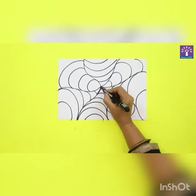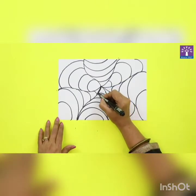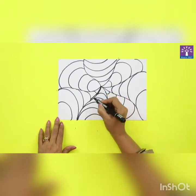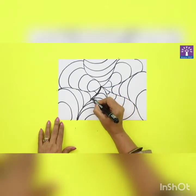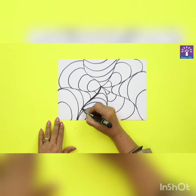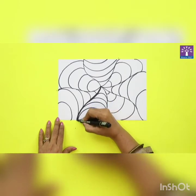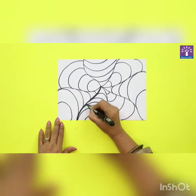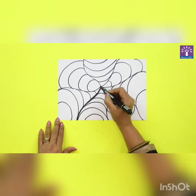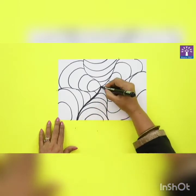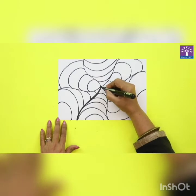We will thicken the seven lines that we made in the beginning. We'll make them slightly more thicker than all the curved lines.